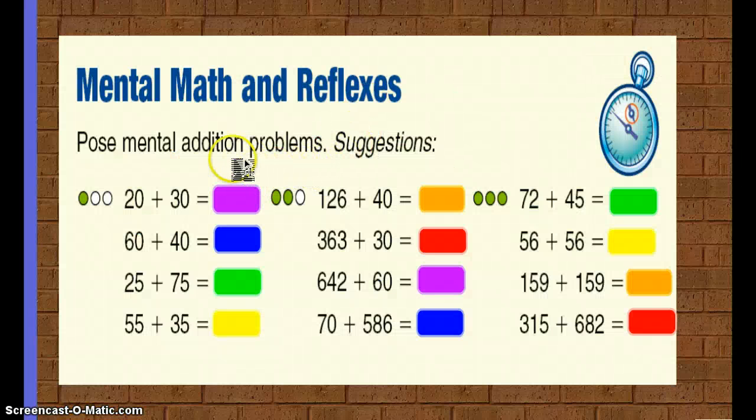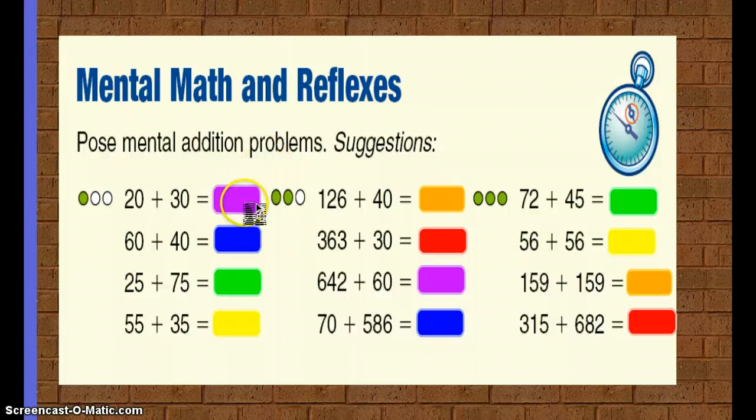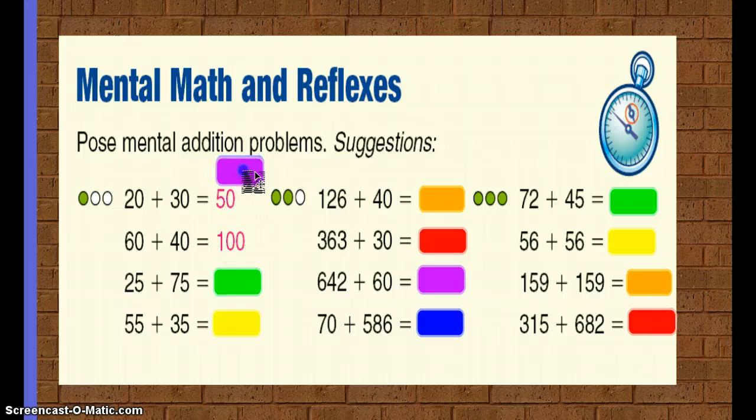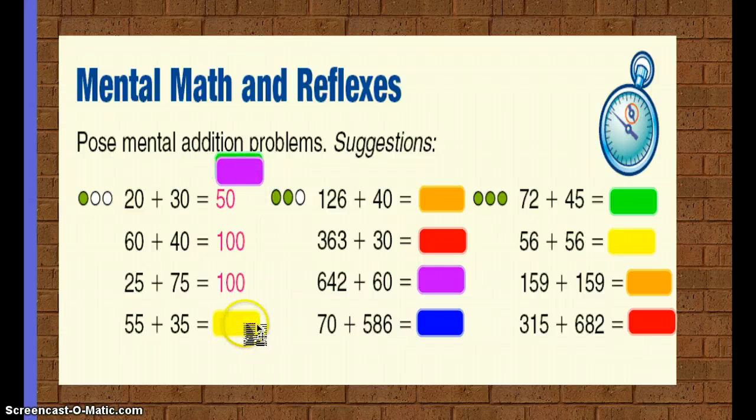Let's do a few mental math problems. Hopefully we're really rocking these out quickly. 20 plus 30 equals 50. 60 plus 40 equals 100. 25 plus 75 equals 100. And 55 plus 35 equals 90.